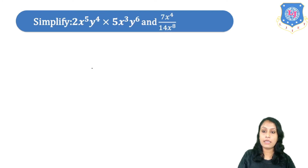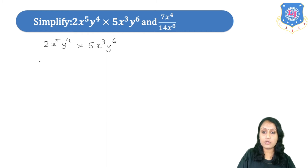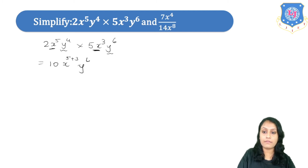Now let's study some examples. The first one is 2x raised to 5 · y raised to 4 into 5x cubed · y raised to 6. We multiply the numbers: 2 × 5 gives 10. The base x is the same so we add the powers: 5 plus 3. The base y is the same so we add the powers: 4 plus 6. On simplification, we get 10x raised to 8 into y raised to 10.